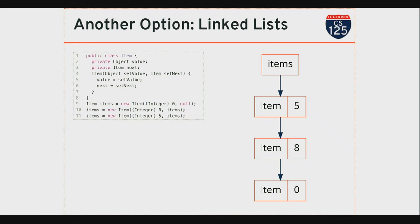I can repeat this process to add as many items as I want to my list. There's no array here — the structure and order of the items is stored inside every item. Every item has one piece of the list structure: it knows where the next item is. Starting from 'items', I use it to find the first item, use that item's next property to find the next, and continue until I reach an item with next equal to null — the last item in the list.